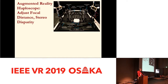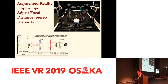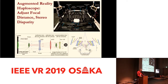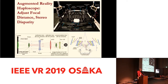We call it the augmented reality haploscope. It has a simple optical system that allows us to insert a lens that changes the focal distance, and stereo disparity is presented by physically rotating portions of the display. Because of this, the focal distance and disparity distance can be adjusted independently of each other to a high degree of accuracy. Engineering and calibrating this display was very challenging and took a number of years of effort.